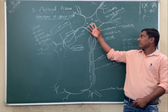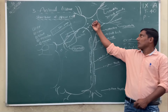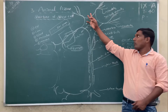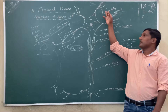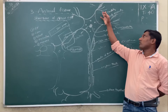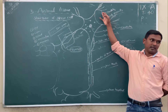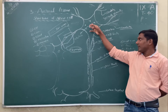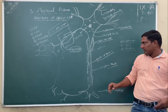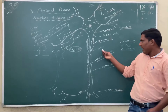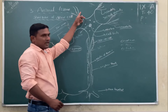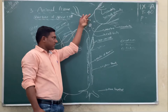The cell body has small projections called dendrites, and the cell body has long projections called axons. The dendrites receive information and the axon carries it away from the cell body.